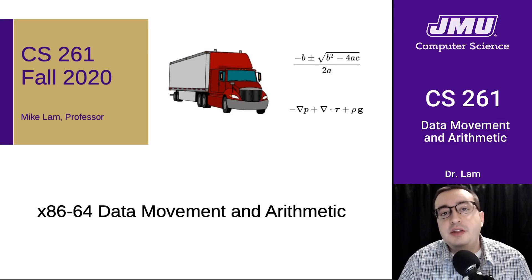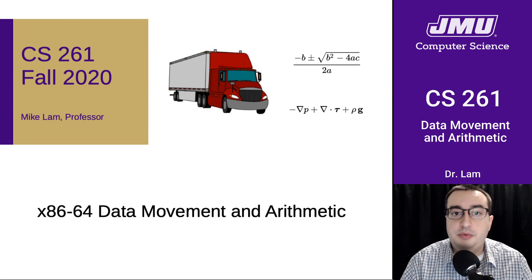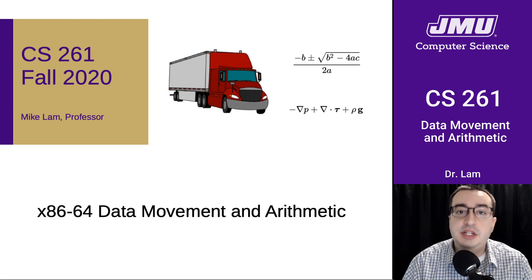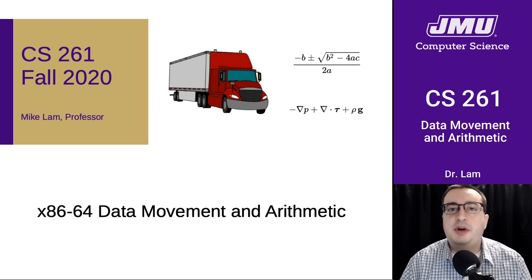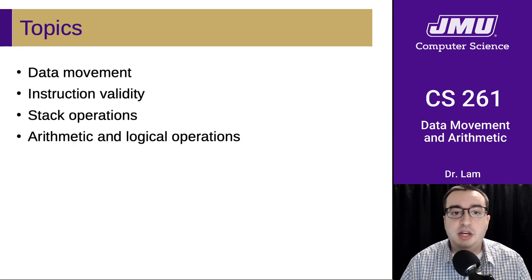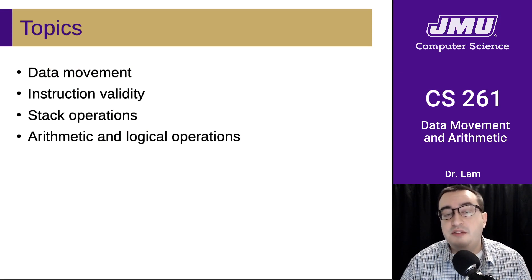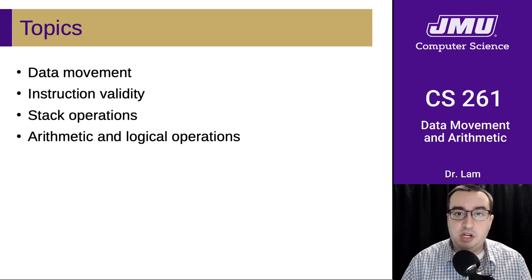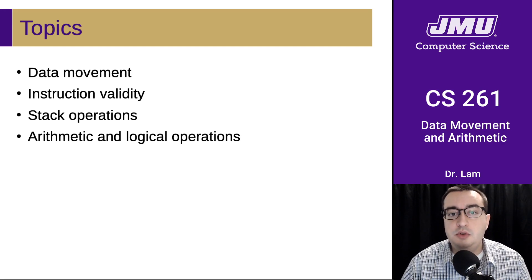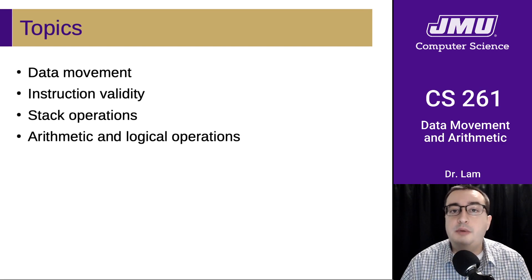Now that we've had a basic introduction to assembly programming, we're going to spend the next couple of days looking into these topics in more detail, learning more of the nitty gritty details about how all these low level system components work together. Today we're going to be talking about data movement and arithmetic — how we move data around in assembly, what makes a valid movement instruction, how we can use stack operations to manipulate memory, and all of the arithmetic and logical operators that we have.